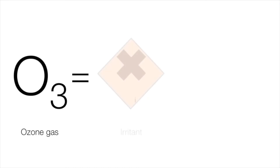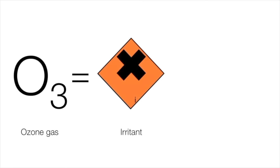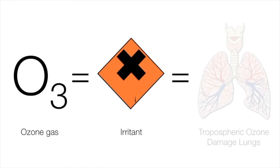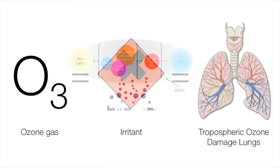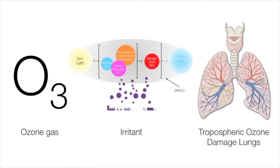Ozone gas is an irritant to the respiratory system and should not be breathed in directly into the lungs. This is the reason why tropospheric ozone can be problematic for those with respiratory issues like asthma.